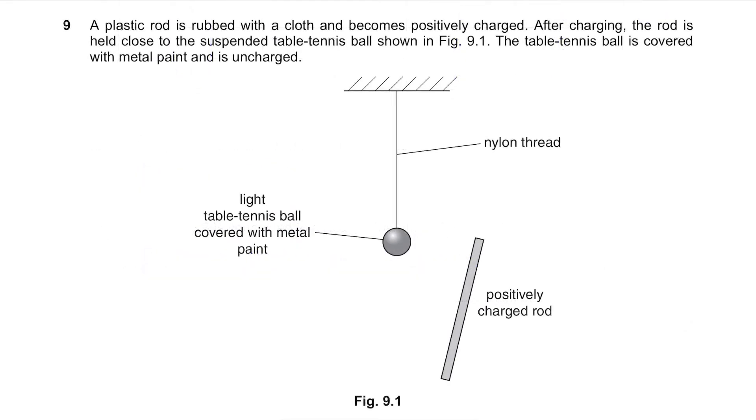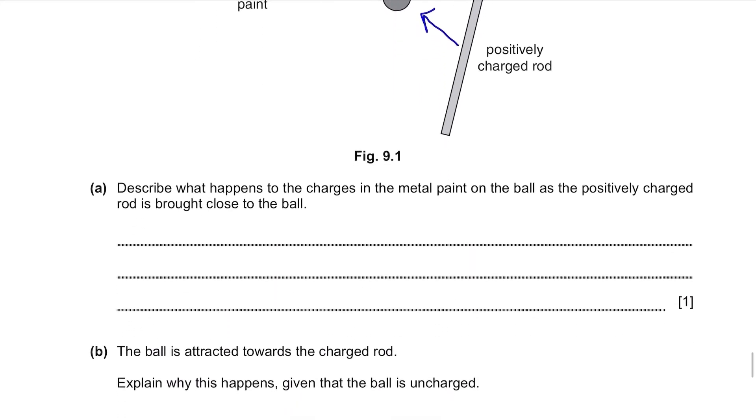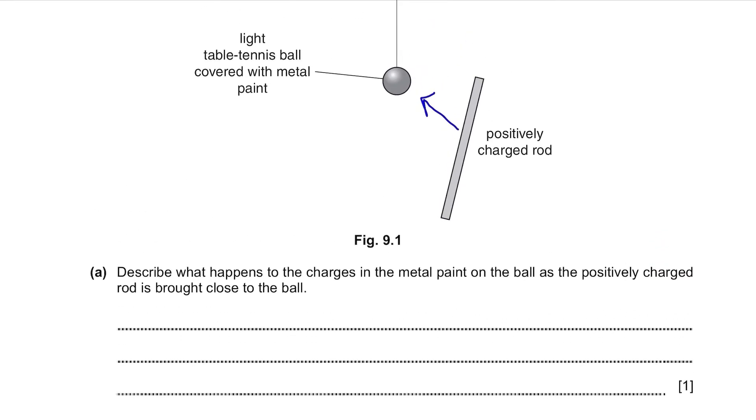Question 9. A plastic rod is wrapped with a cloth and becomes positively charged. After charging, the rod is held close to the suspended table tennis ball shown in figure 9.1. The table tennis ball is covered with metal paint and is uncharged. So they're gonna put this positively charged rod close to the table tennis ball with no charge but covered in metal paint.